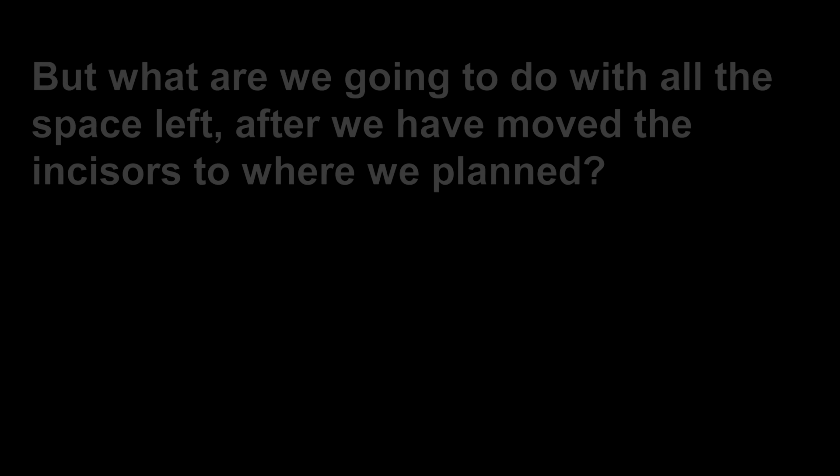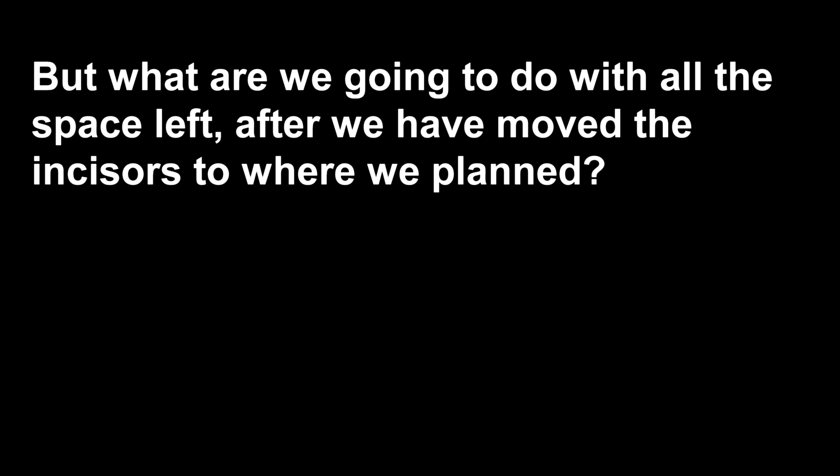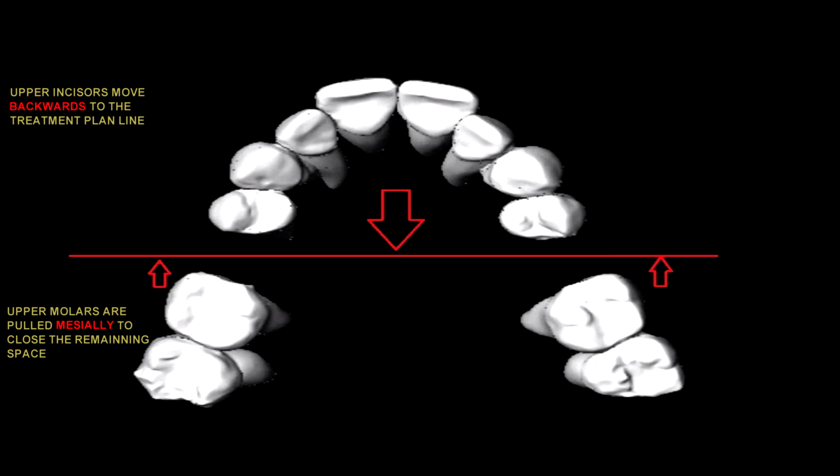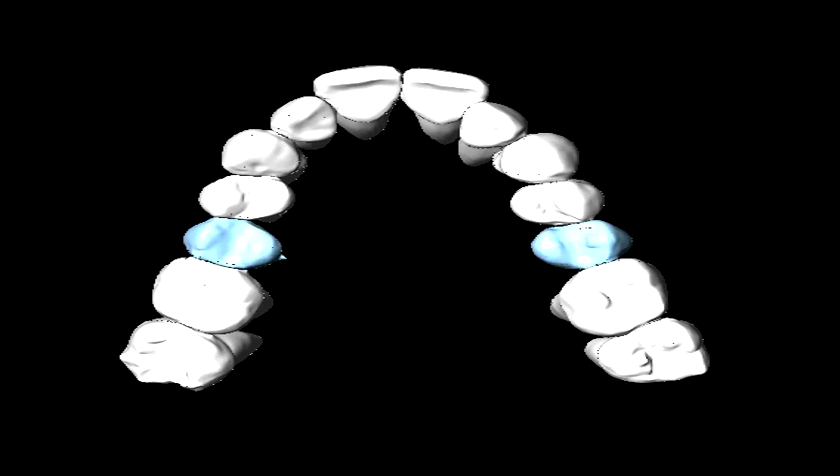But what are we going to do with all the space left after we have moved the incisors to where we planned? We know that if we move the front teeth all the way back to close all the extraction space, the upper lip will move too far back and the face will have a dished-in appearance with a protruding nose. So the technical design is to use only half the space for the front teeth to move back, and then pull the molar teeth forward to close the rest of the space.